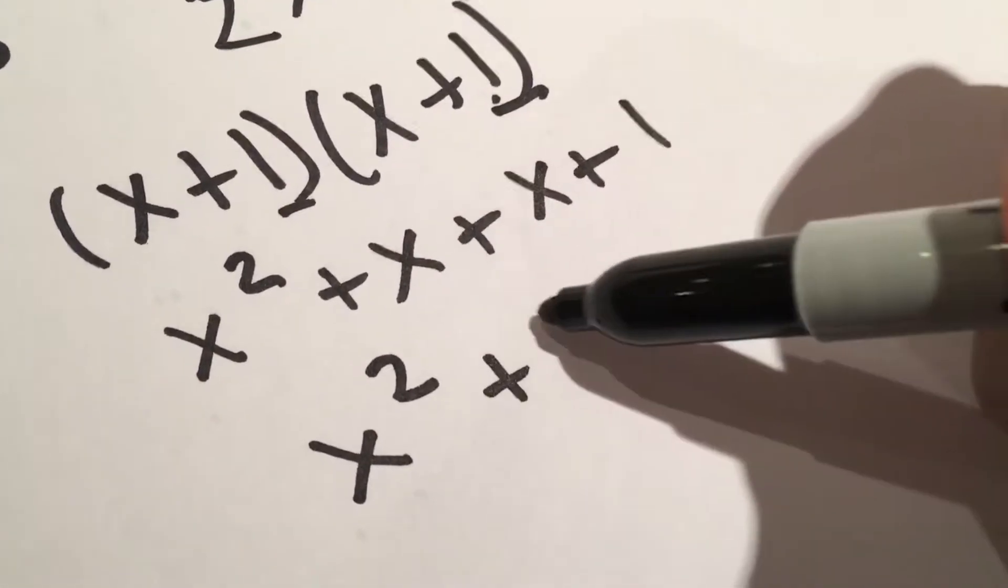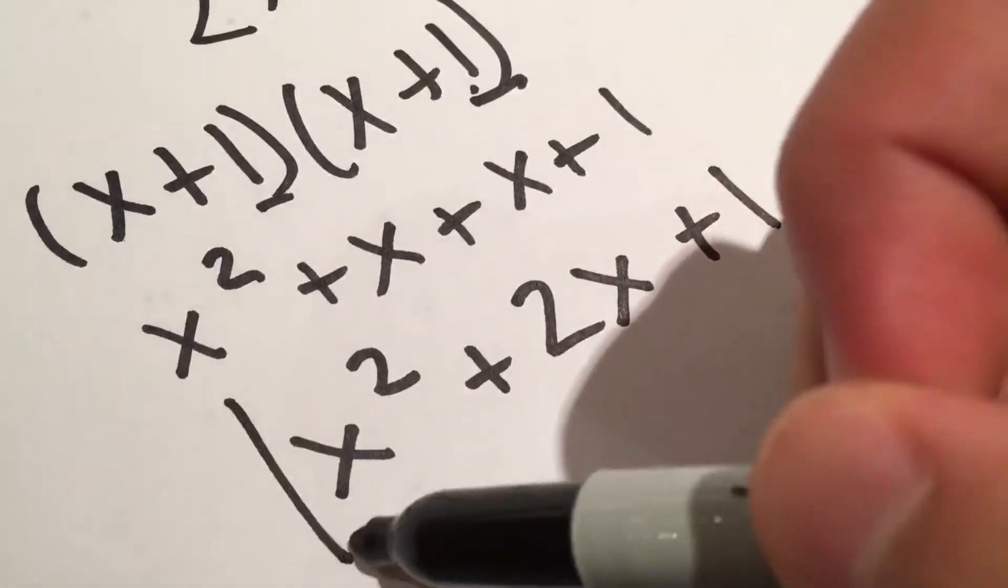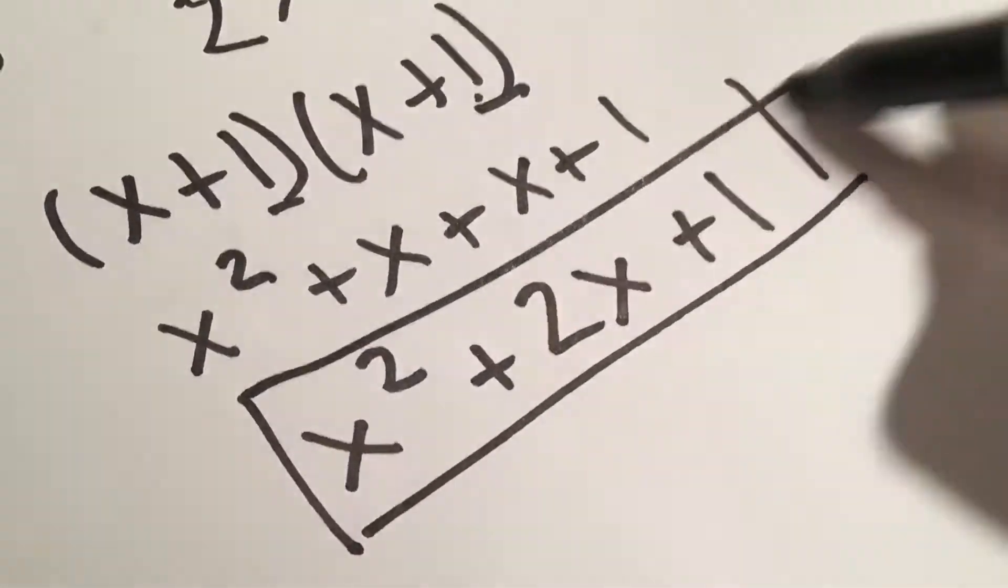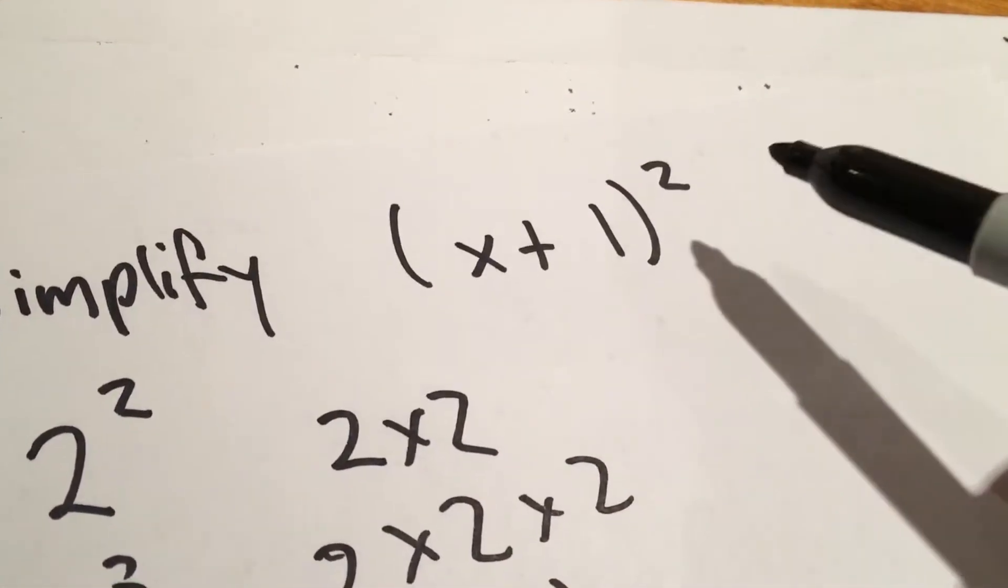just get x squared plus 2x plus 1. That is our solved final version of x plus 1 squared.